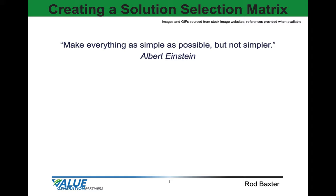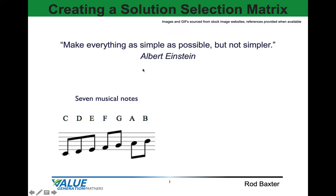In this module we're going to review creating a solution selection matrix. I really like this quote by Albert Einstein: make everything as simple as possible but not simpler. It needs to be just simple enough that it can be implemented, it's usable, it's functional, but not so simple that it doesn't work.